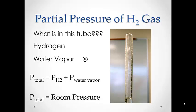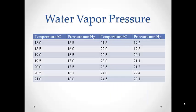Our total pressure is the same as the room pressure that we measured on the day of the lab. The water vapor pressure is a constant that has been measured in a lab before. To find the partial pressure of the water vapor in your container, you just use the temperature of the room. If the room temperature is between those listed, you do not round — you need to find the closest pressure for your given temperature.